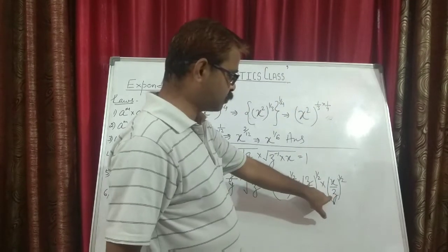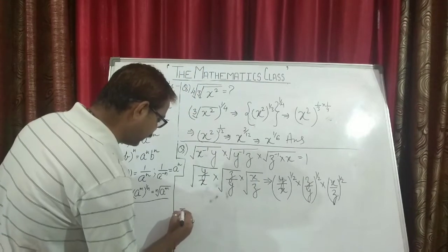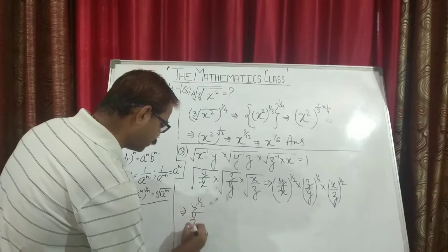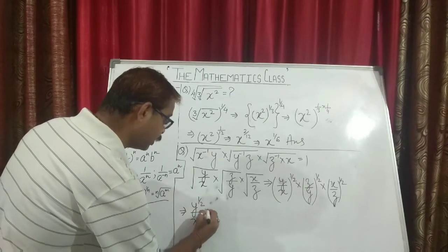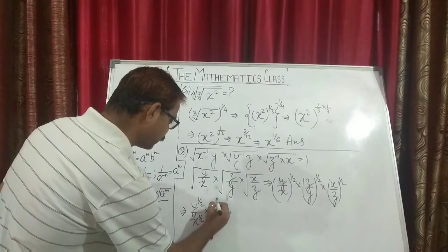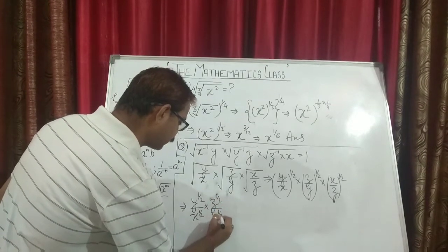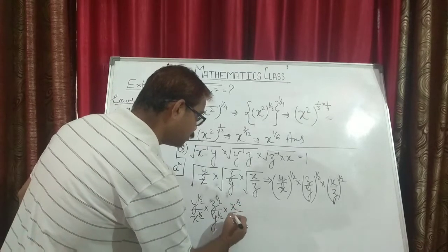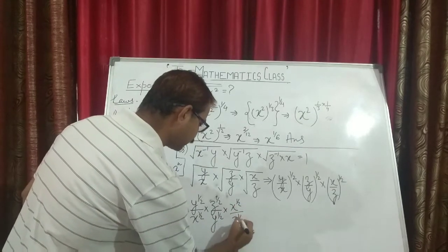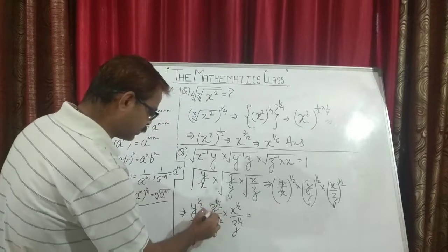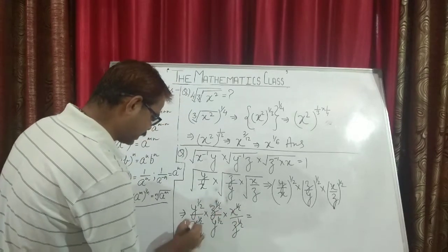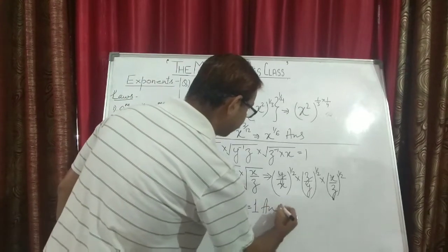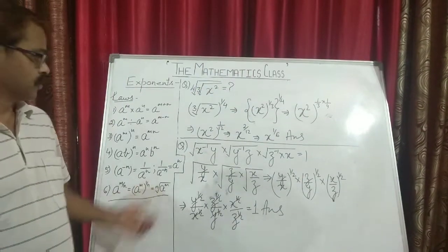z to the power 1 by 2 and z to the power 1 by 2 cancel each other. Expanding fully: y to the power 1 by 2 upon x to the power 1 by 2, times z to the power 1 by 2, times x to the power 1 by 2 upon z to the power 1 by 2. All terms cancel — z with z, x with x, y with y. The final value is 1, which was required to be proved.